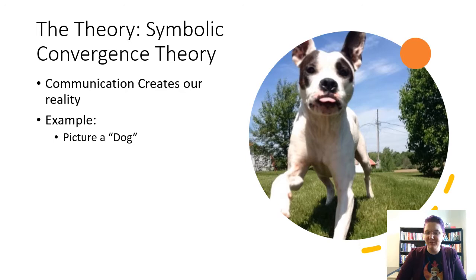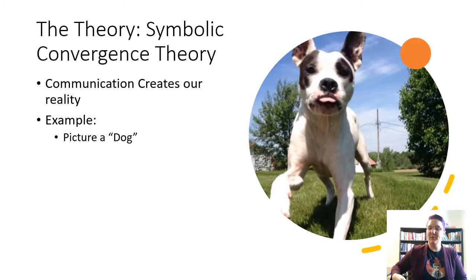Now imagine if we were using the symbol 'dog' for something other than just a simple illustration in class. Imagine if you told a landlord, 'I have a dog,' and the landlord is imagining a little purse chihuahua — and then you bring in this 45-pound, 30-mile-an-hour bullet dog named Trixie who's part pit bull. That miscommunication, that lack of shared symbols, is going to create a problem, or create a shared social reality.